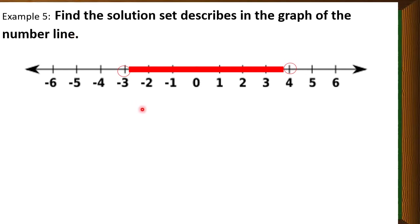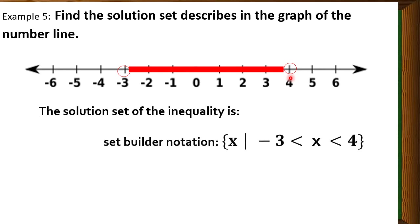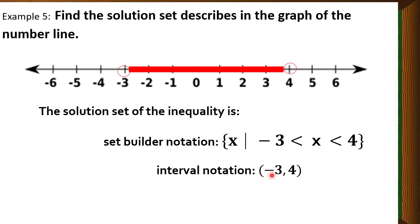Now let's have another example. We have an open circle at negative 3, and this shaded region here is part of the solution, and an open circle at positive 4. For set builder notation, we write the set of all x such that x is less than 4 but greater than negative 3. These are the values greater than negative 3 but less than 4. For the interval notation, we have negative 3 up to 4, using open parentheses on both sides, because negative 3 is not part of the solution and 4 is also not part of the solution.